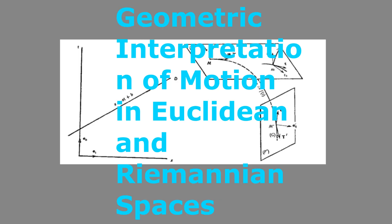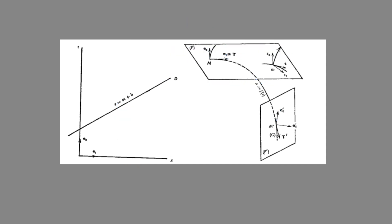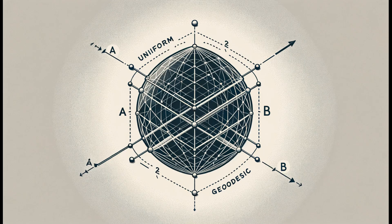In this further analysis, we will examine the conceptual transition from two-dimensional Euclidean space to curved Riemannian space, and highlight the geometric interpretation of forces and inertial motion in the context of general relativity. In a two-dimensional Euclidean space represented by the orthogonal axes, a material point not subject to any force moves according to the equation x equals at plus b. Geometrically, this represents uniform rectilinear motion, where the path between any two points a and b is the shortest distance between them — a geodesic in Euclidean terms.